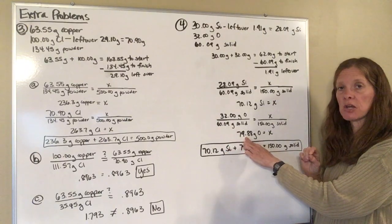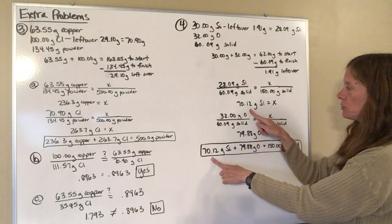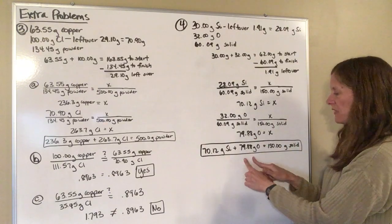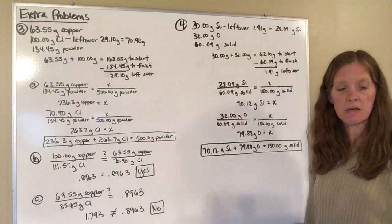Again, always go back and check to make sure that answer fits and makes sense. The 70.2 grams of silicon plus the 79.88 grams of oxygen. When you add that together, it gives you 150, which is how much solid you were supposed to make. So it comes out right.